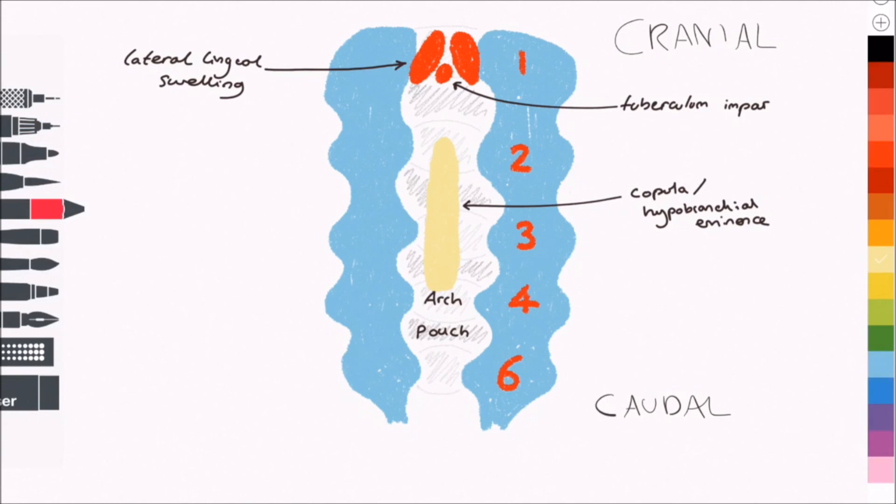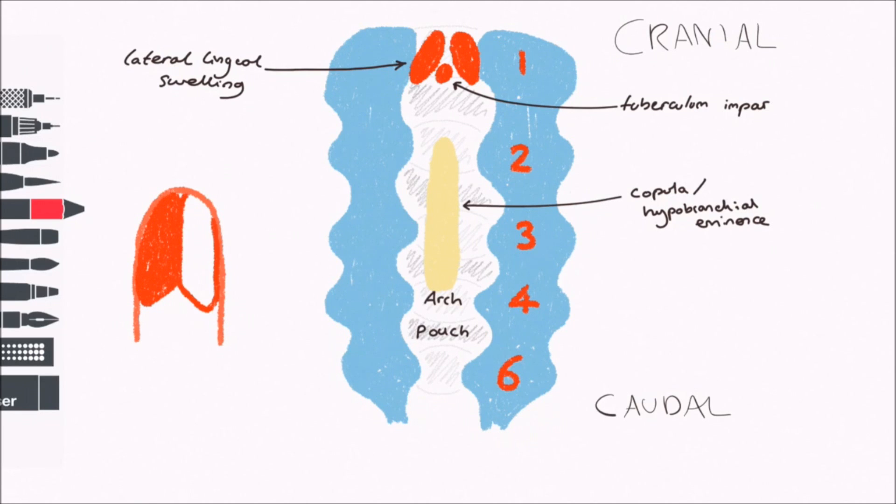In the adult, the v-shaped groove, also known as the sulcus terminalis on the tongue, represents the fusion of epithelium covering the first and third pharyngeal arches.